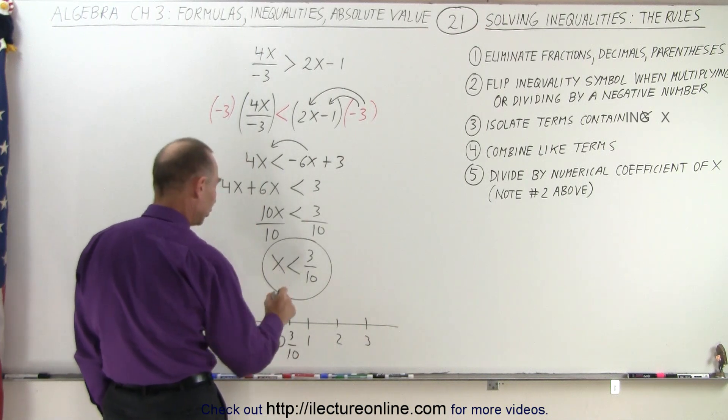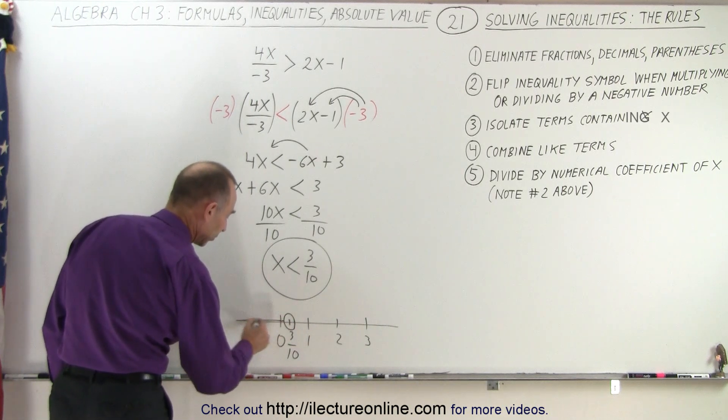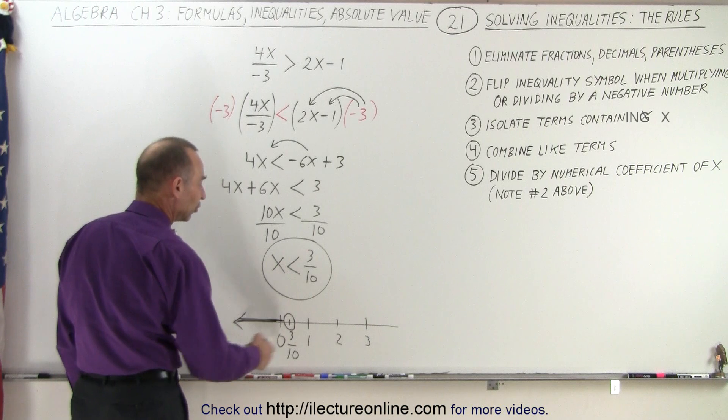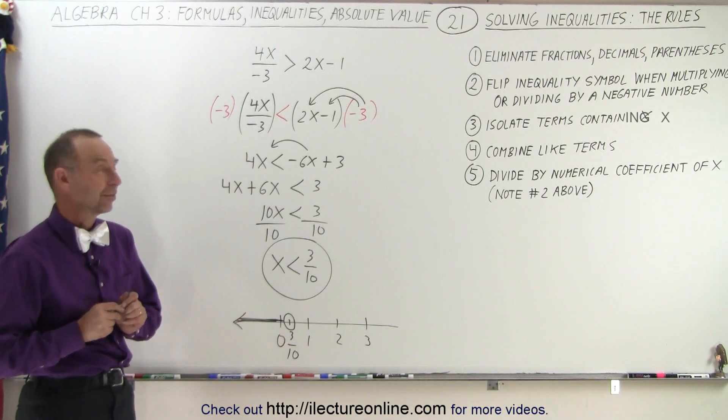It does not include that. That would be the endpoint. So we draw a little circle on it. And all numbers less than that, which would mean to the left. And so there's the graphical solution of x smaller than 3 tenths.